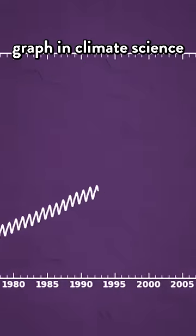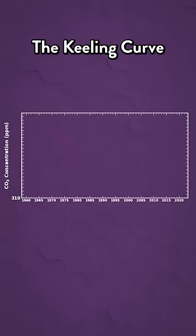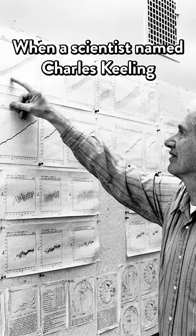This is probably the most famous graph in climate science. Maybe even all of science? The Keeling Curve. It shows the long-term increase in atmospheric carbon dioxide since 1958, when a scientist named Charles Keeling started measuring CO2 levels.